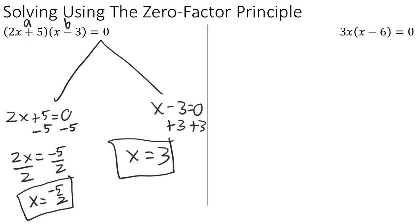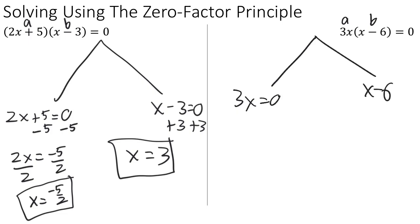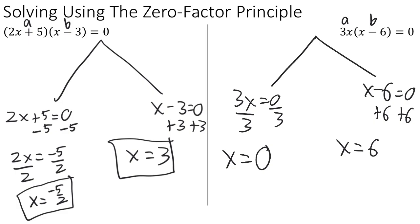Now let's look at our second equation: 3x(x − 6) = 0. Let's identify what is being multiplied together. On one hand, 3x is one item, and on the other hand, x − 6 is another. So 3x plays the role of a and x − 6 plays the role of b. The zero factor principle gives us two possibilities: either 3x = 0 or x − 6 = 0. For 3x = 0, divide by 3 to get x = 0. For x − 6 = 0, add 6 to both sides to get x = 6. So our two solutions are x = 0 and x = 6.